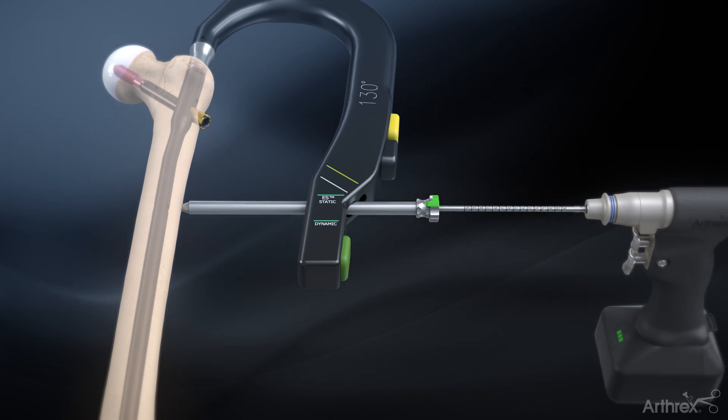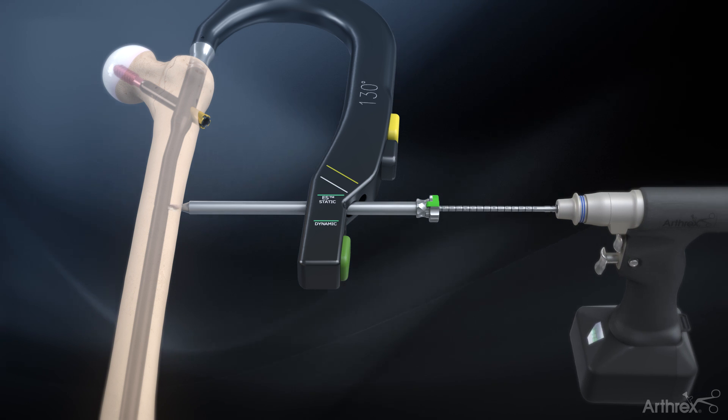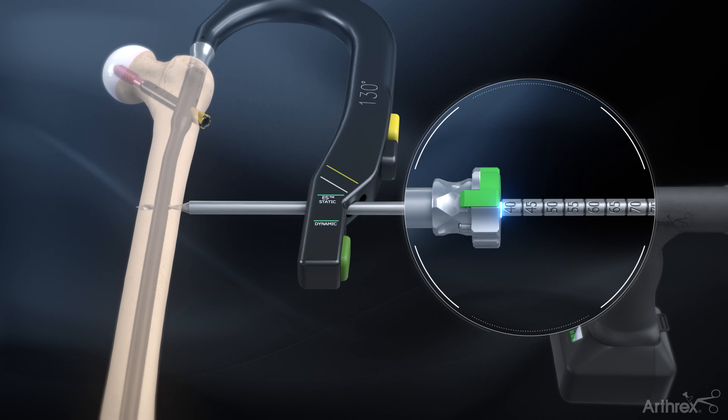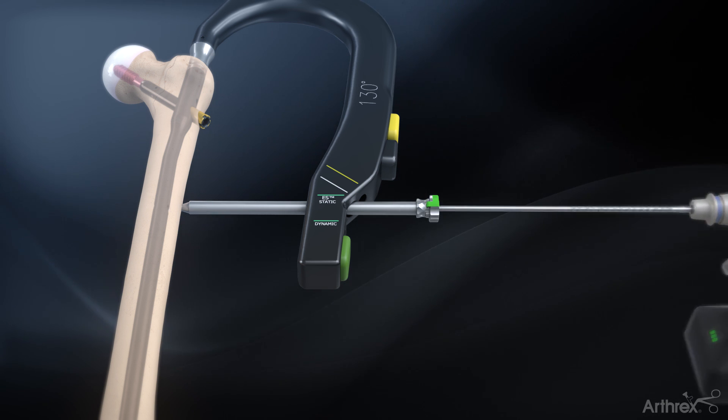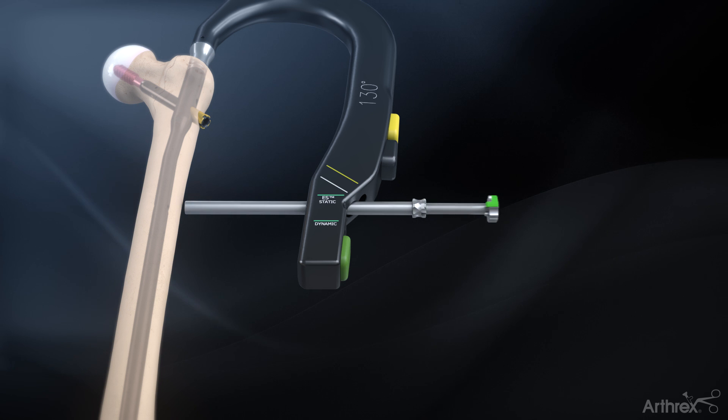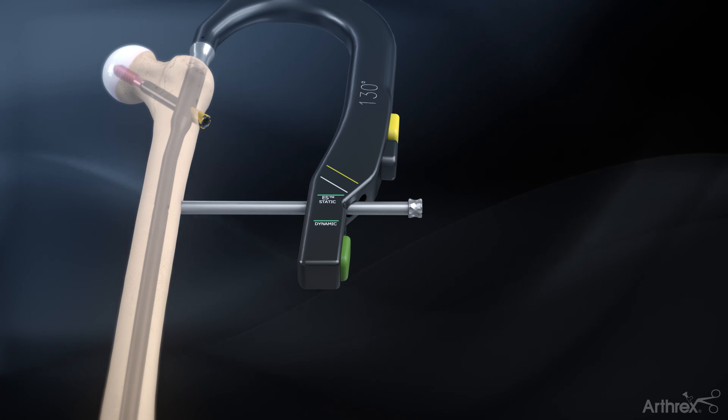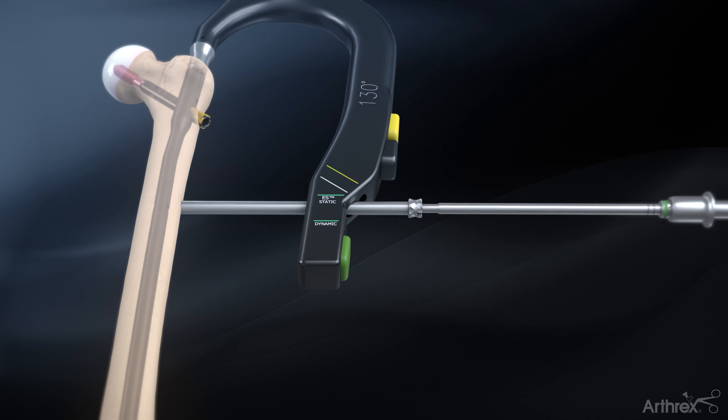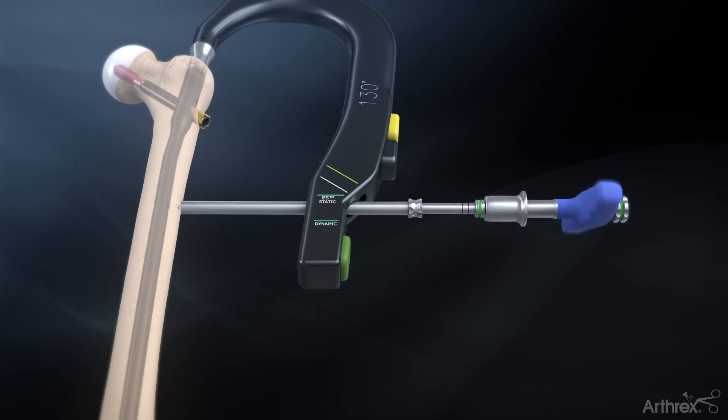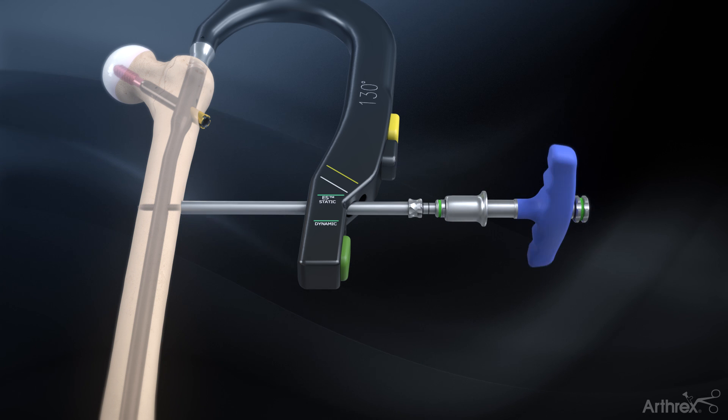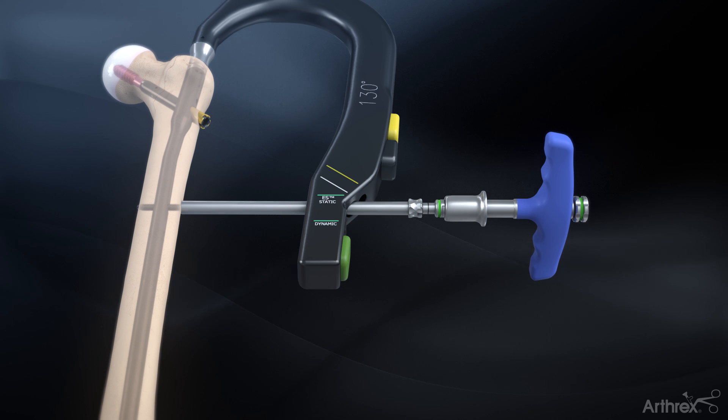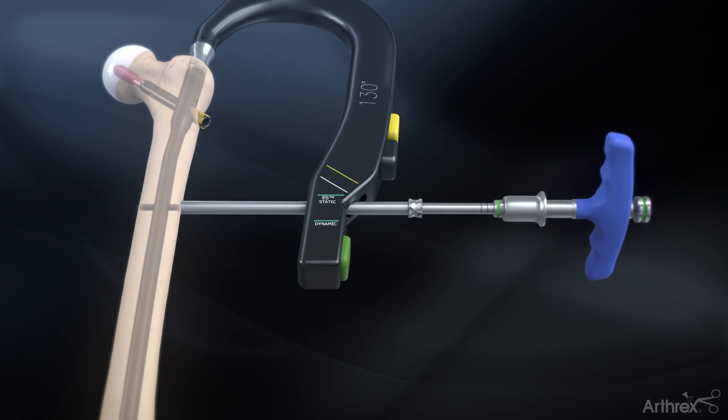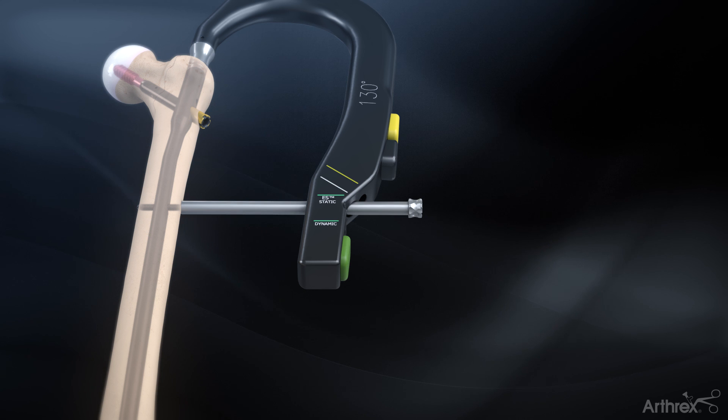Drill bicortically using the 4.0 mm calibrated drill bit. Determine the screw length using the calibrations on the drill bit. Remove the distal drill guide and insert the 5.0 mm captured screw with the 5.0 mm hex driver. When the first laser mark reaches the sheath, the bottom of the screw head has reached the other end of the sheath. Unscrew the capturing rod and hex driver and remove the driver assembly.